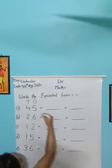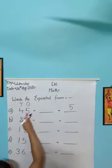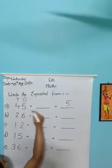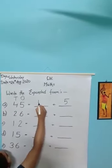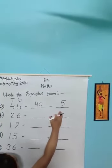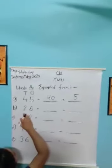Five ones hai, so yahan pe beta, hum log write karenge, five. Kyunki single number hai, five. Aur four kya hai, tens mein hai. So, yahan pe, hum log write karenge, forty. Forty plus five barabar kya hota hai beta? Forty-five.